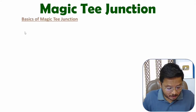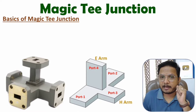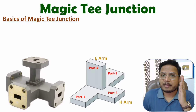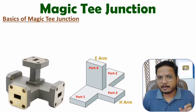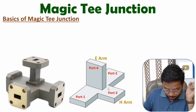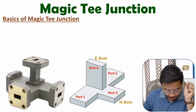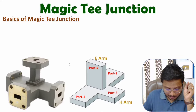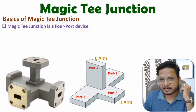Magic T is a combination of E-plane T and H-plane T, which I have already covered in earlier videos in this microwave engineering lecture series. With Magic T we have in total four ports: port 1, port 2, port 3 which is the H-arm, and port 4 which is the E-arm.